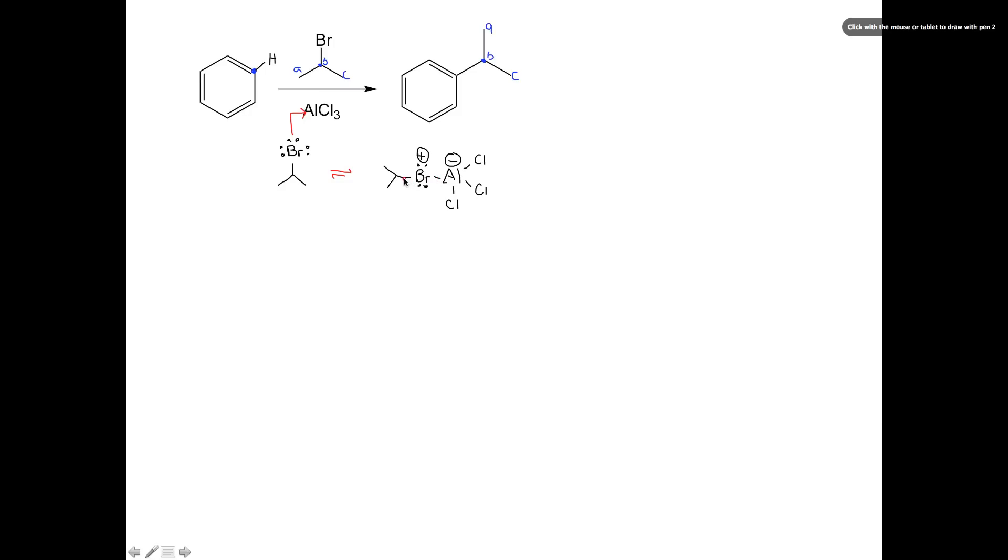The next step that happens is this carbon-bromine bond breaks, which leaves me with a secondary carbocation and my aluminum species here.